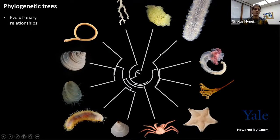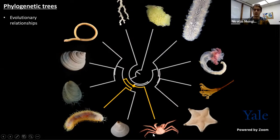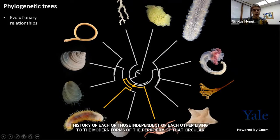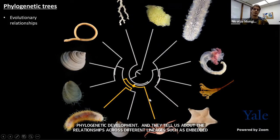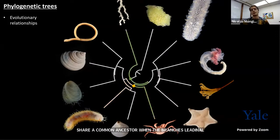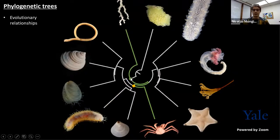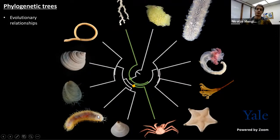These phylogenetic trees not only tell us a lot about evolutionary relationships across different lineages — for example, that arthropods such as this crab and polychaete worms share a common ancestor where their branches coalesce, highlighted here with this yellow dot — but also that their common ancestor is closer in time to us than either of them is to this coral here at the top, whose last common ancestor is highlighted in green. That green node necessarily precedes the yellow node, meaning arthropods and polychaete worms are more closely related to each other than either is to corals. That's how phylogenetic trees are read.